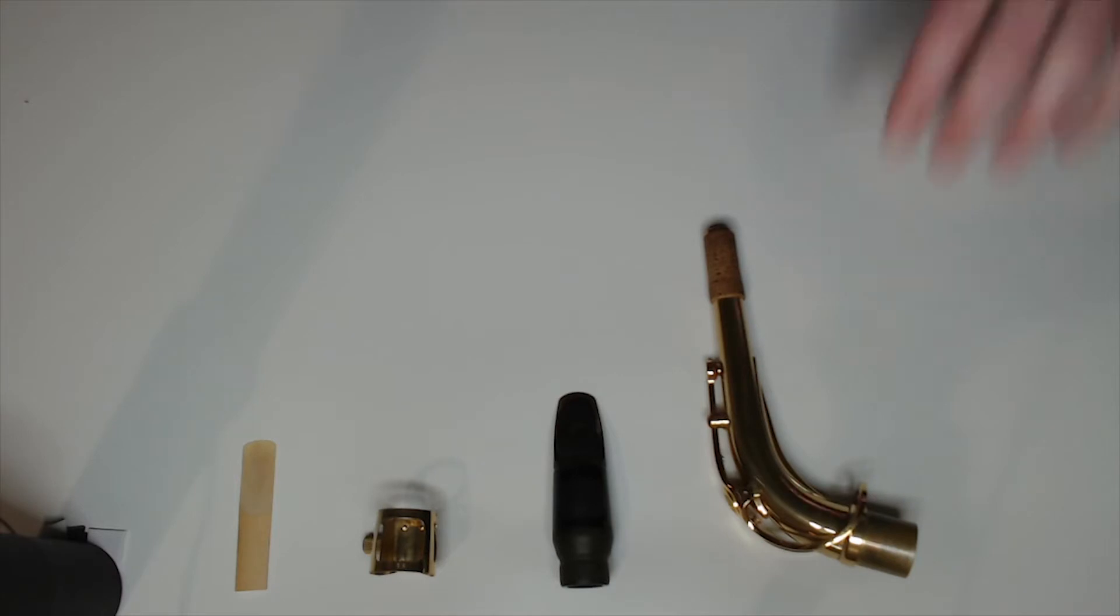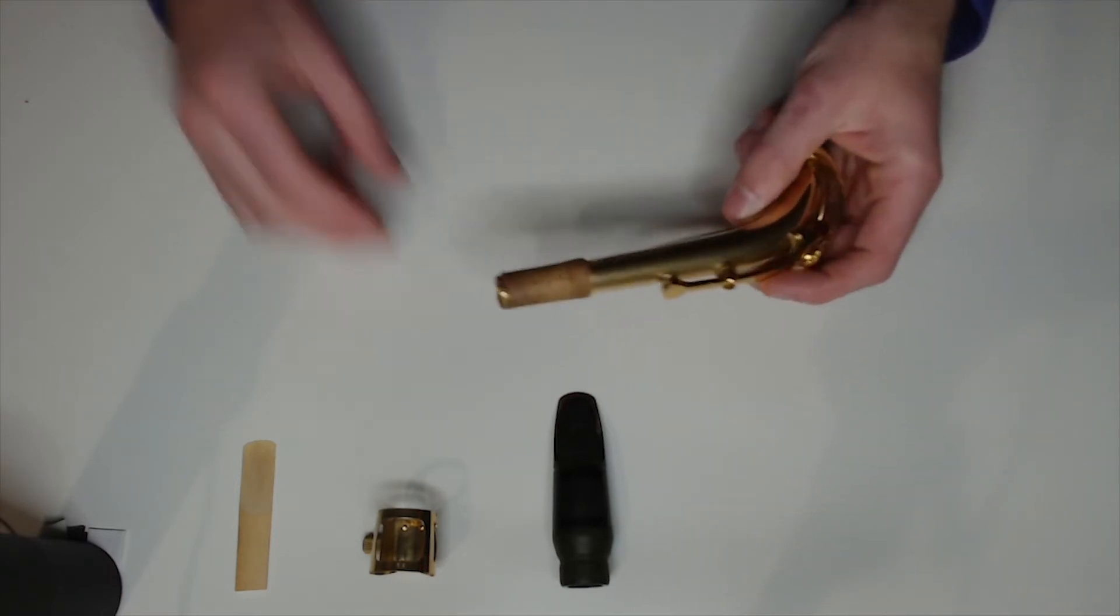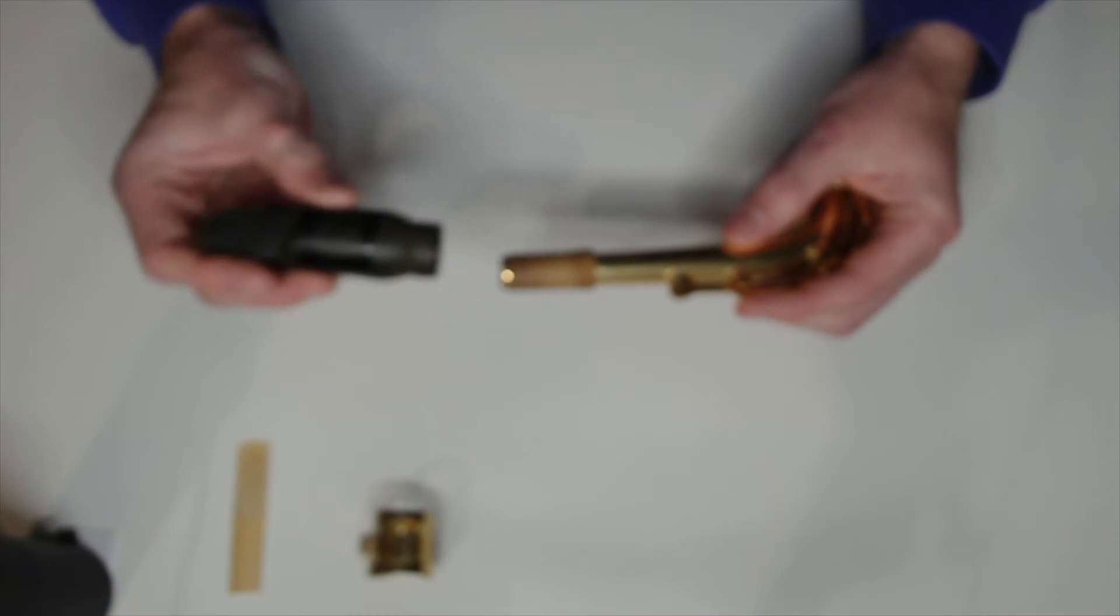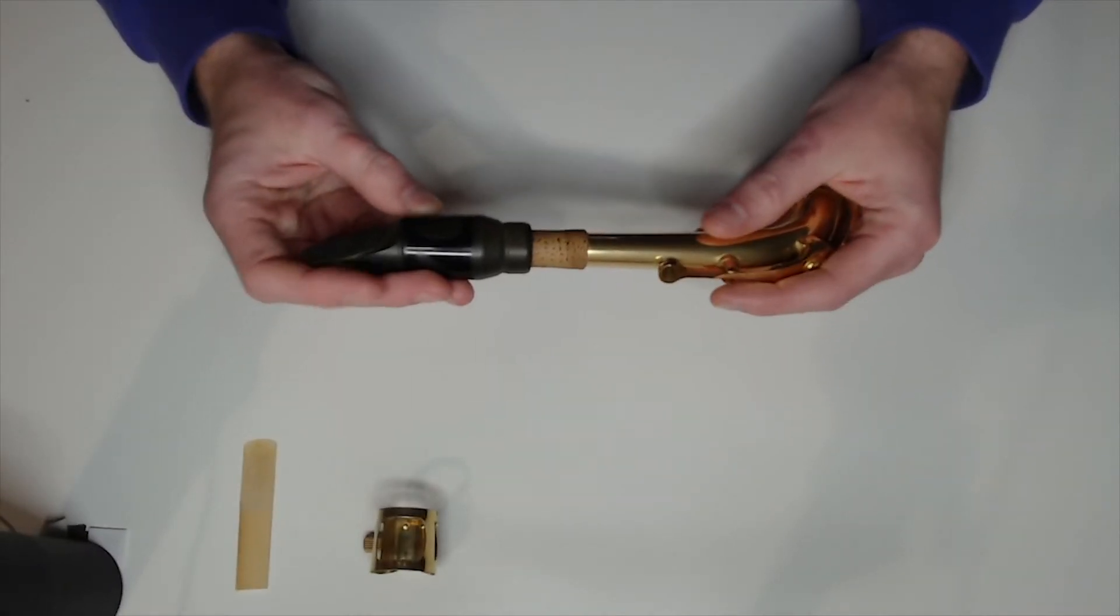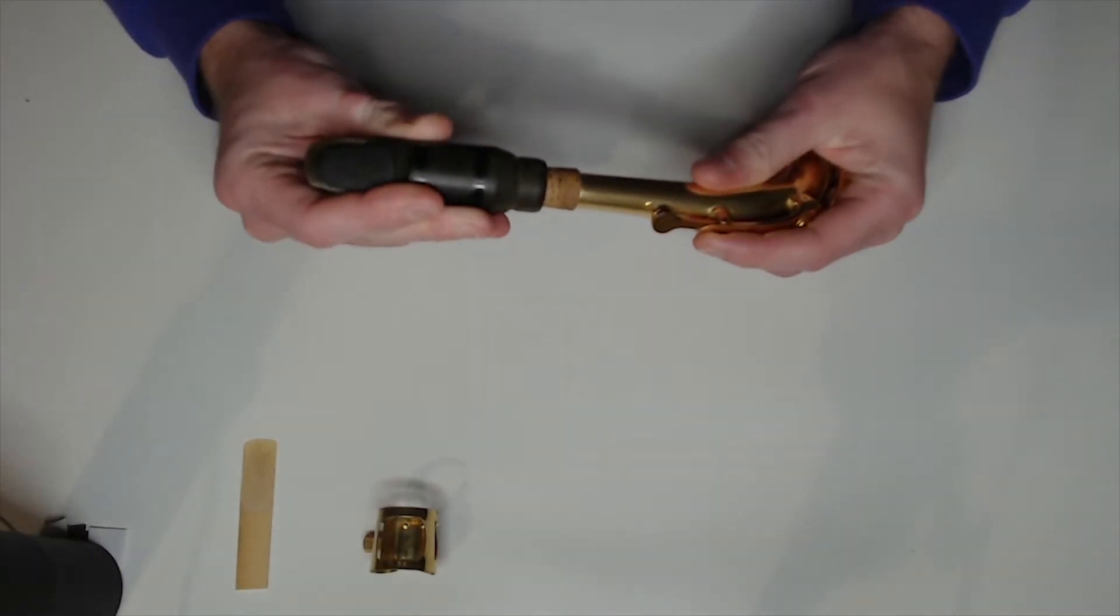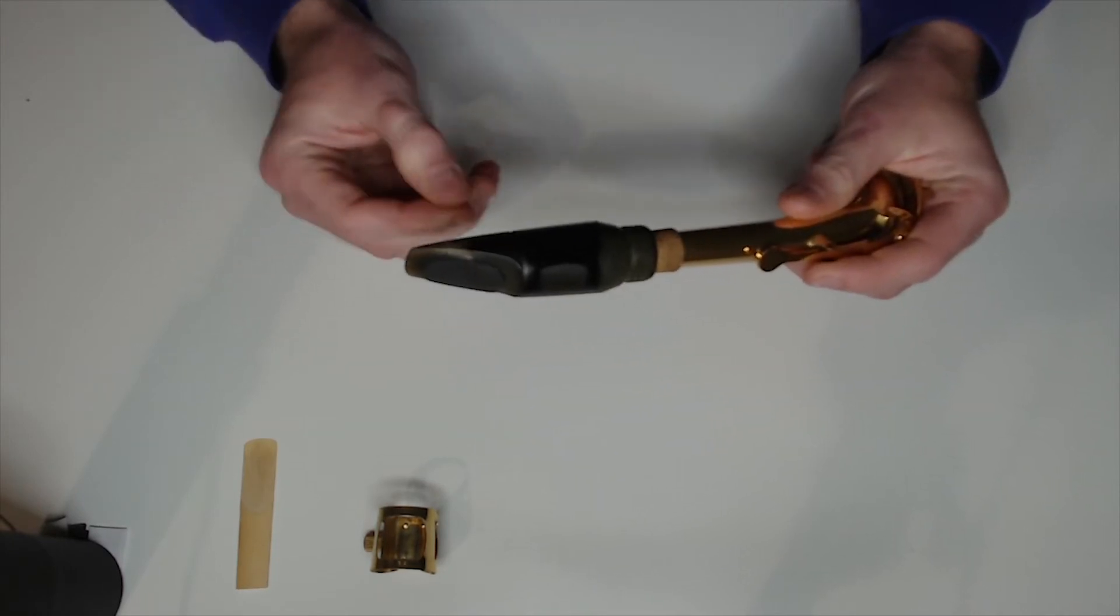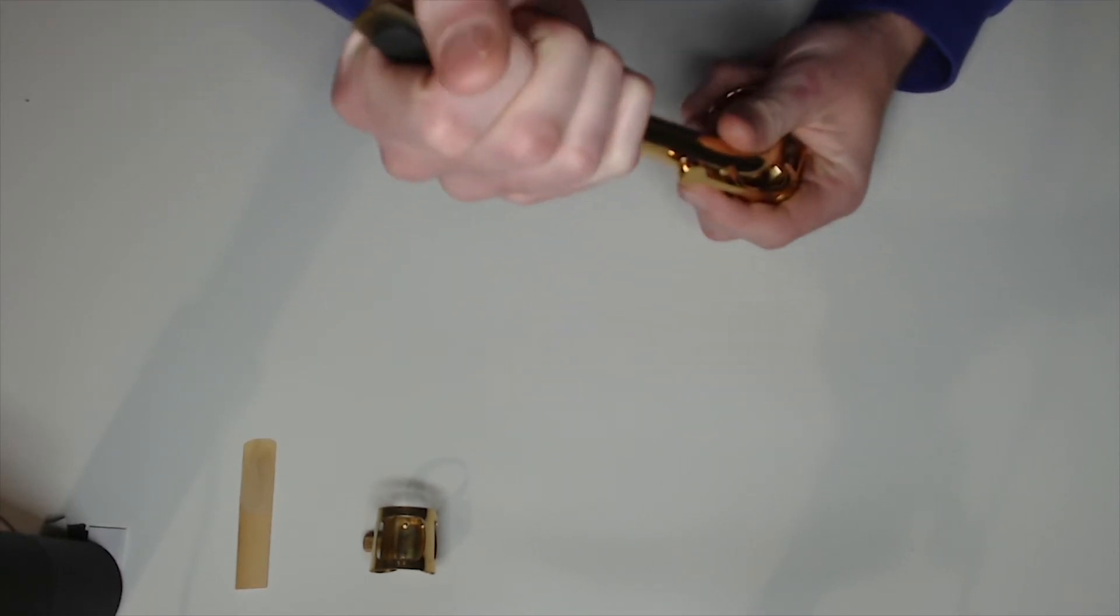The first thing we need to do is take our neck and mouthpiece and put the mouthpiece on the neck. When you're sliding it down the cork, make sure to twist it and not just push it so that you don't have to force it as much.